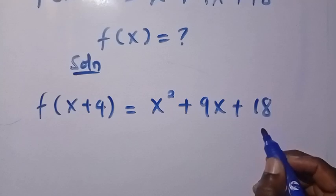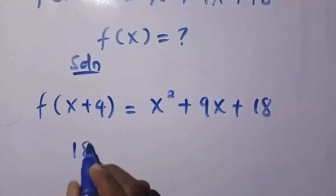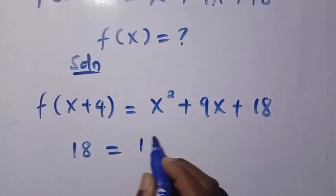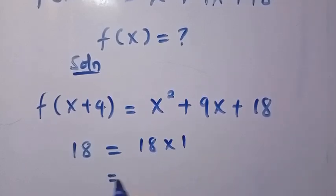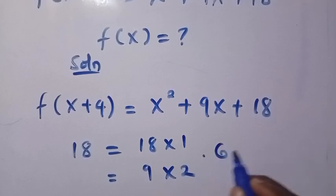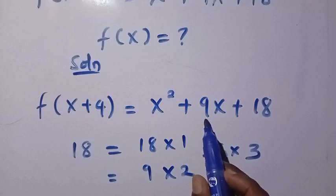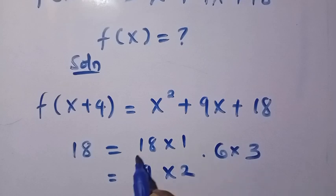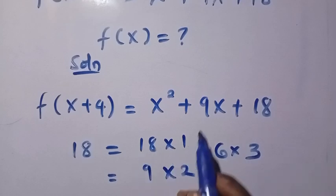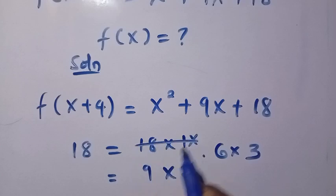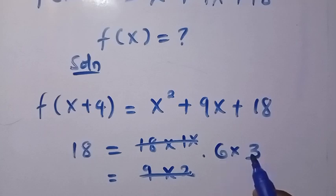Let's consider 18. What are the factors of 18? We have 18 × 1, then 9 × 2, and 6 × 3. We don't need negative values because we need to look for numbers that when we add together give us 9 and when we multiply give us 18. 18 + 1 gives us 19, 9 + 2 gives us 11, but only 6 + 3 gives us 9. So 6 × 3 gives us 18.